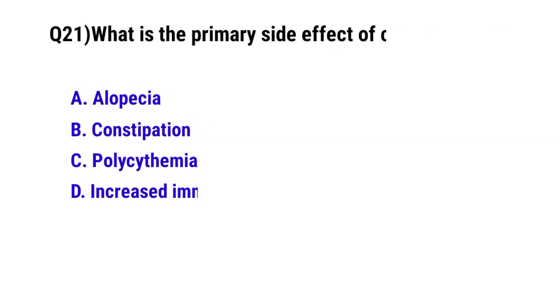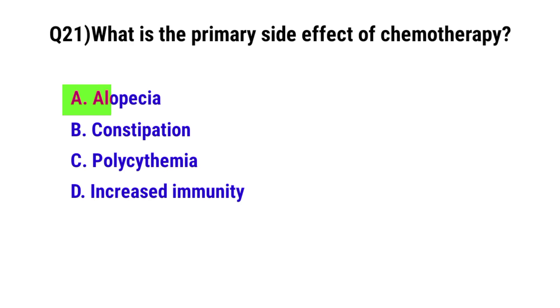Question number 21: What is the primary side effect of chemotherapy? The correct option is A: Alopecia.